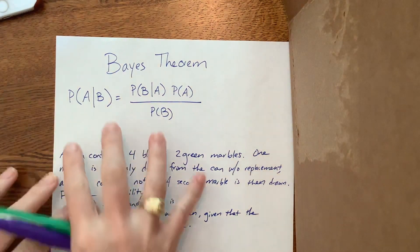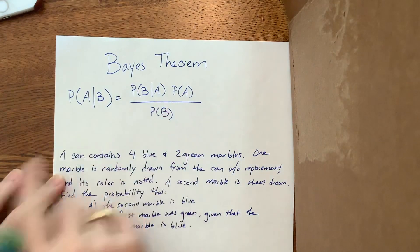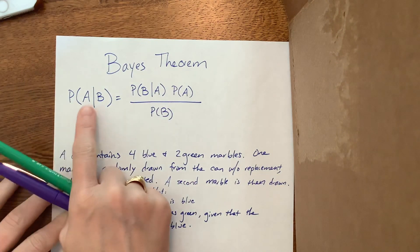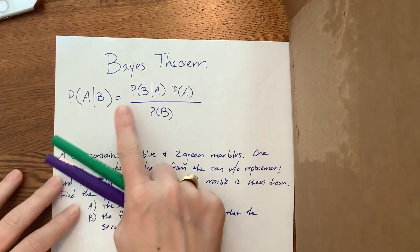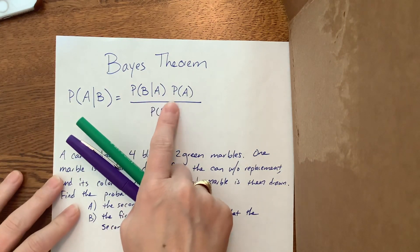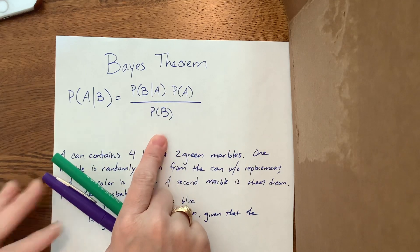This is Bayes' theorem according to our textbook. The probability of A given B is equal to the probability of B given A, times the probability of A, all over the probability of B.